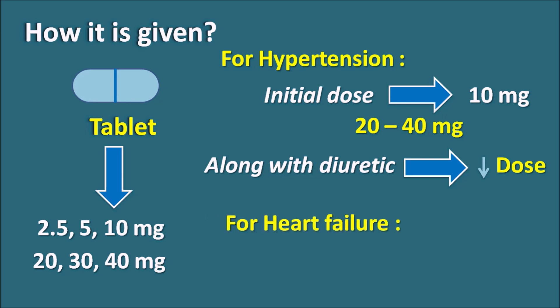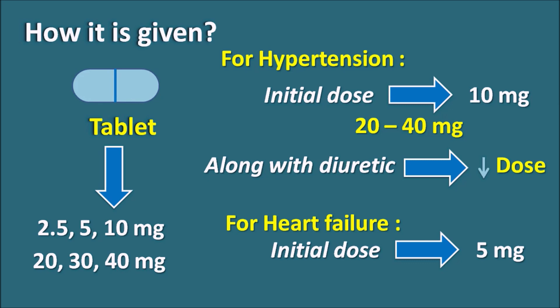For heart failure and other cardiovascular disorders, the initial dose is somewhat less — around 5 mg, which can be slowly increased according to patient condition. In summary, Lisinopril is a lysylproline derivative with the suffix '-pril' indicating it is an ACE inhibitor. This drug inhibits the conversion of angiotensin 1 to angiotensin 2, thereby inhibiting all actions of angiotensin 2 — vasoconstriction, increased aldosterone secretion, and increased sodium reabsorption — resulting in reduced blood pressure and increased sodium excretion. This drug can be combined with diuretics like hydrochlorothiazide at 12.5 or 25 mg, but the dose of Lisinopril should be reduced to prevent severe hypotension.